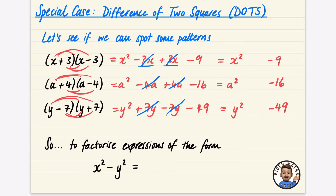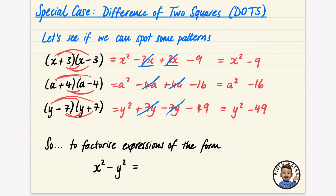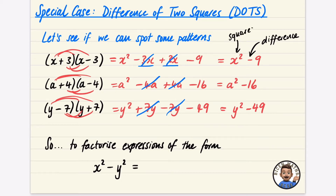Because we never have those middle terms written down, we need to recognize these as the difference of two squares. The reason it's called that: the symbol in the middle is subtraction, which means difference, and both terms are square numbers — something squared minus another square number.